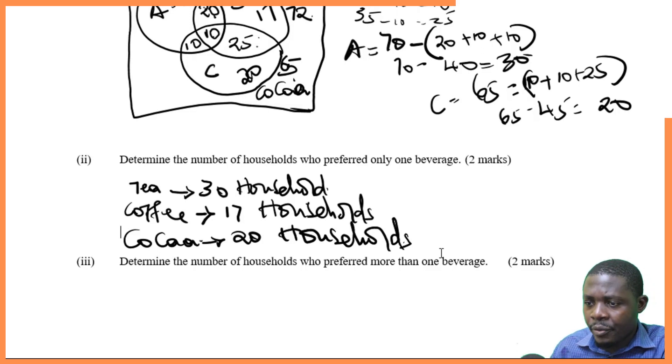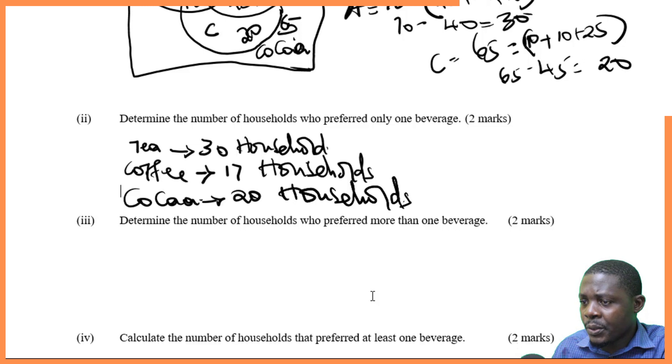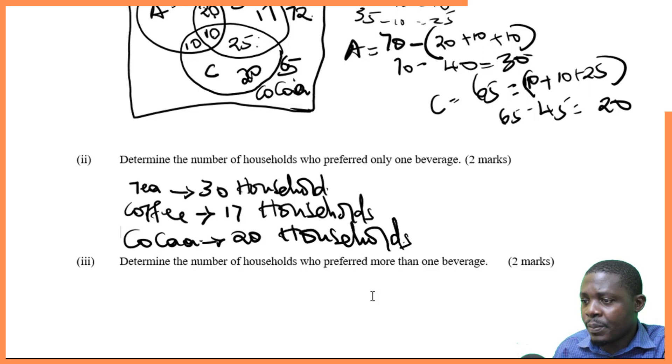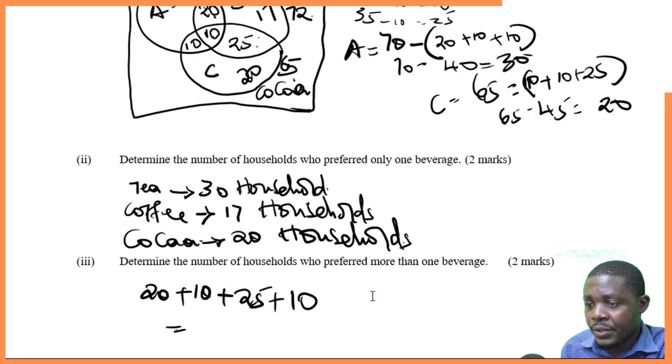And then Roman 3, determine the number of households who preferred more than one beverage. Now we are going to have 20 for tea and coffee, plus 10 for the 3 beverages, plus 25 for coffee and cocoa, plus 10 for tea and cocoa. What you get is 65 households.